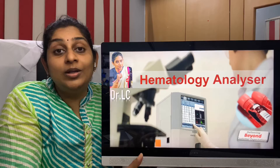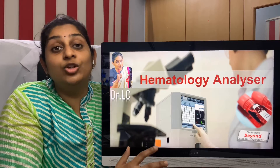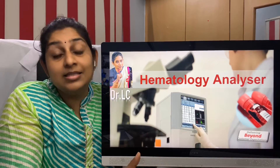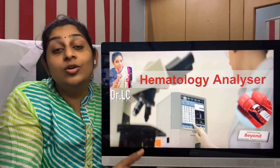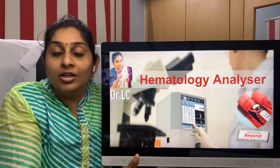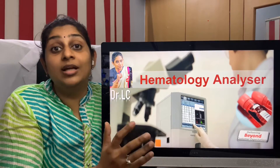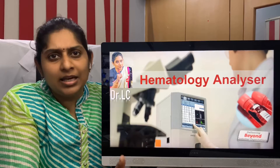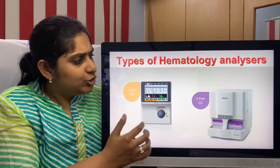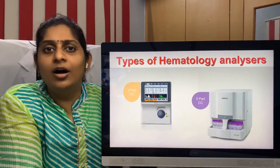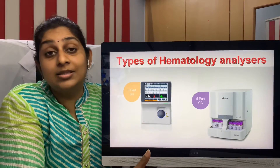In a CBC, we usually have around 12 parameters on a regular basis, which includes the hemoglobin count, the total WBC count, the RBC count, the platelet count, and the different WBC count.